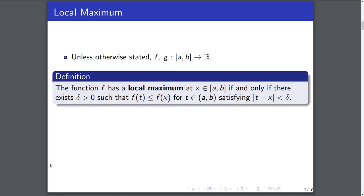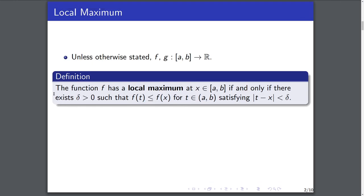The first thing is that of a local maximum. The function f has a local maximum at some point x in that closed interval if and only if there exists some delta greater than zero, such that f of t is less than or equal to f of x for all t where the absolute value of t minus x is less than delta. In other words, there's some open neighborhood about that point where all other points are less than or equal to f of x.